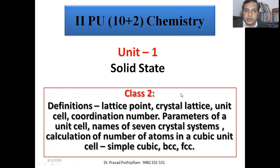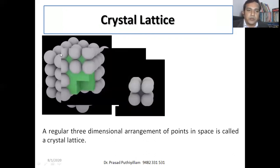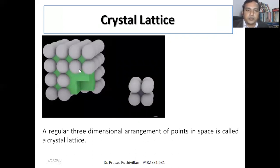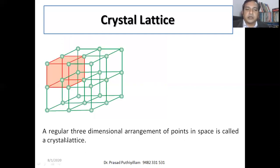In a solid state, the atoms, molecules, or ions can be arranged in a three-dimensional way. This is a representation of a three-dimensional arrangement of atoms, molecules, or ions, in which a small piece is cut and removed just to represent that this contains eight atoms. A regular three-dimensional arrangement of points in space is called a crystal lattice, where each point represents an atom.